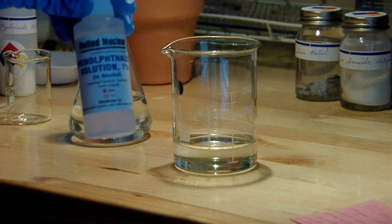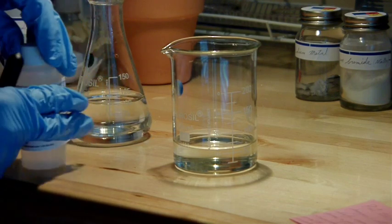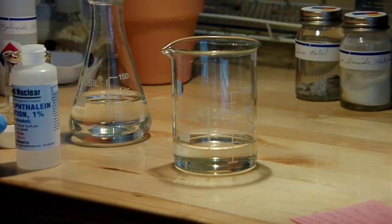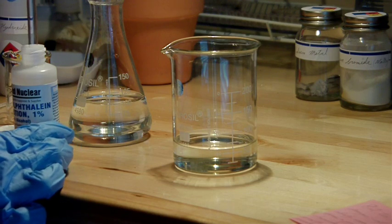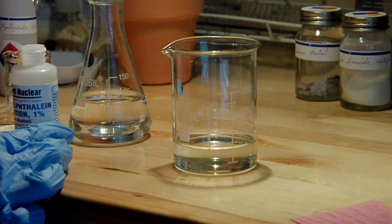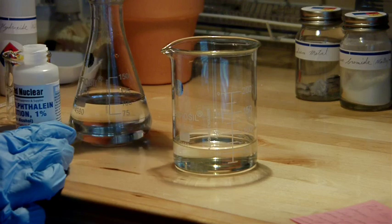So the first thing to do is to add a couple of drops of phenolphthalein indicator solution to the acid. And this is a very powerful indicator, so you really only need a couple of drops of it.